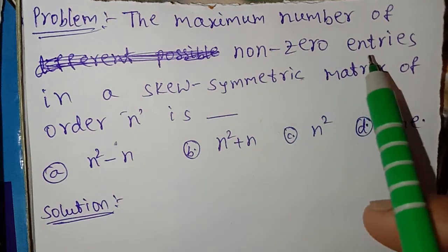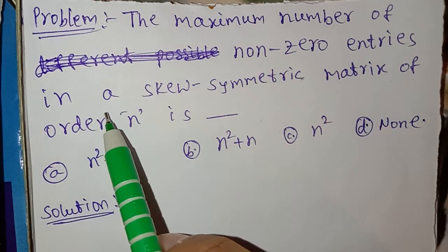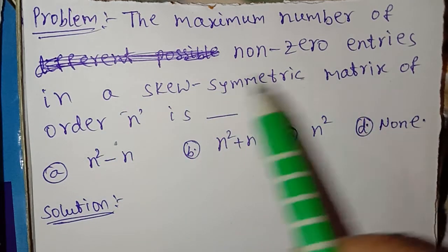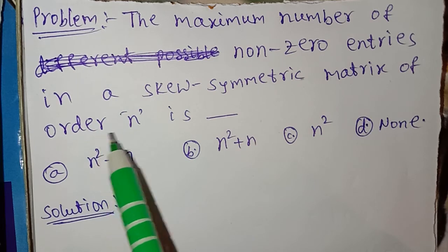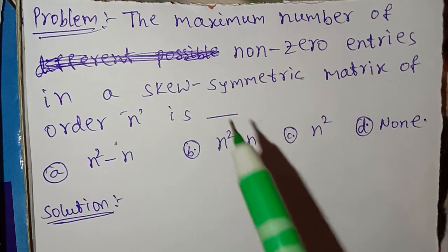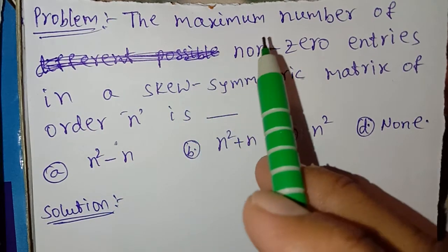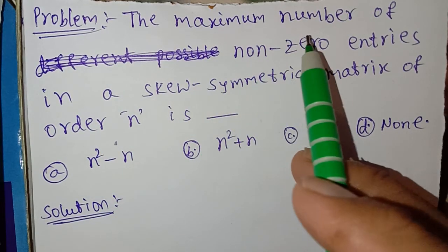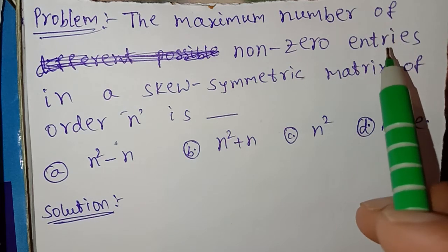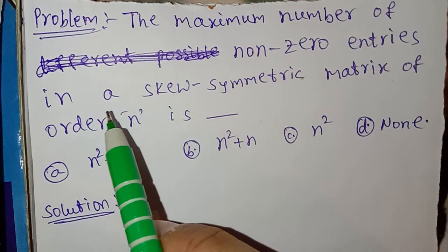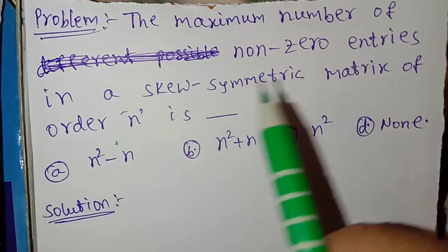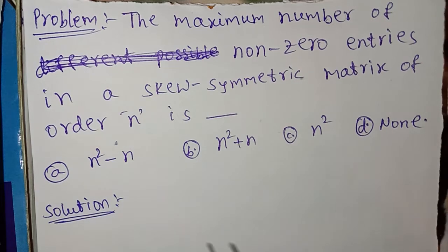We have to find the maximum number of non-zero entries in a skew symmetric matrix of order n.